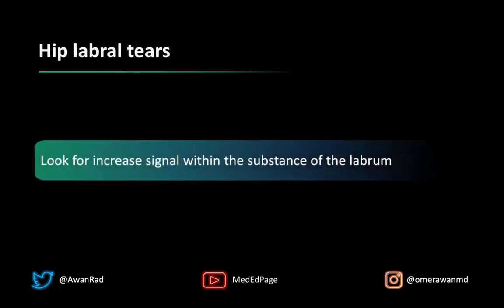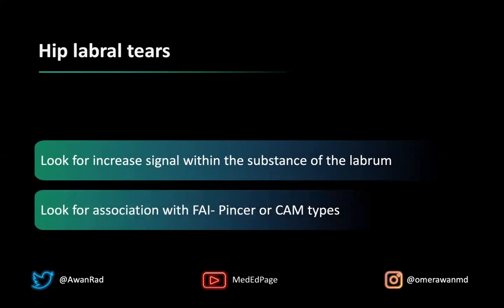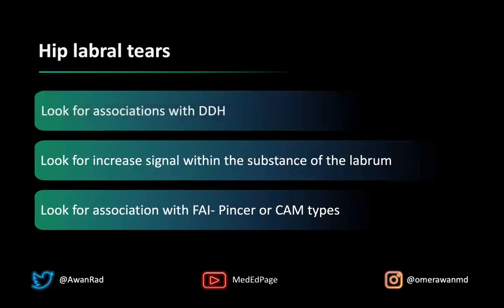The key to making the diagnosis is looking for that increased signal, or in the case of an arthrogram, increased contrast within the substance of the labrum. It's always important to look for the association with femoral acetabular impingement — the pincer and cam types. Femoral acetabular impingement is a morphological abnormality of the bone that allows for impingement of the bone, labrum, and/or cartilage. These have high associations with labral tears, so it's very important to consider.